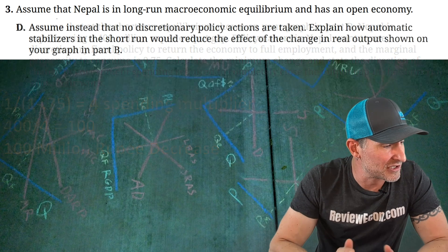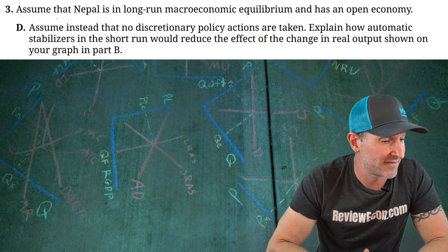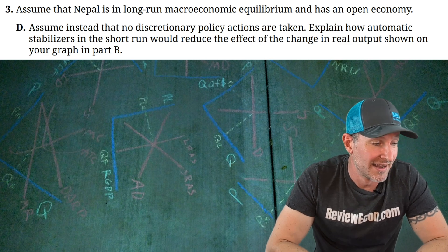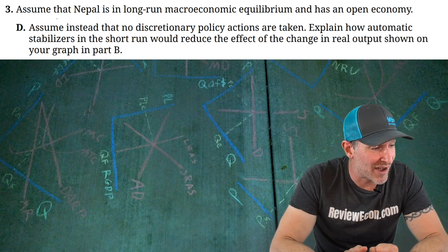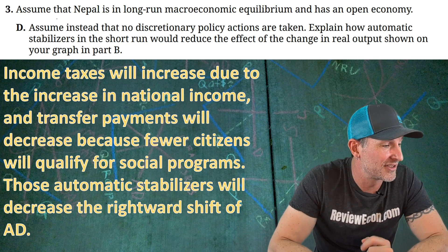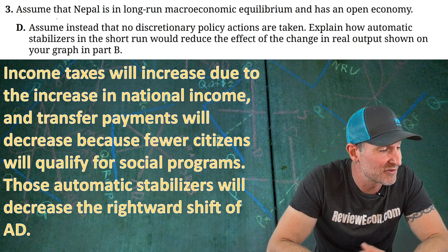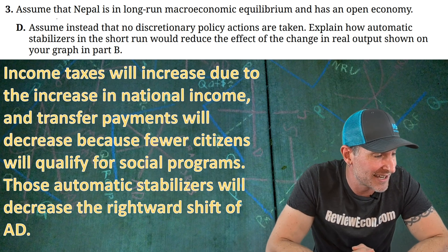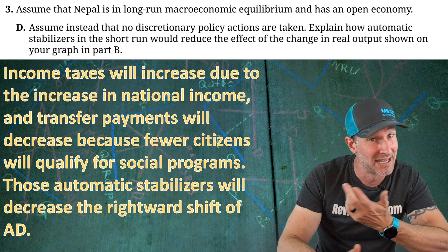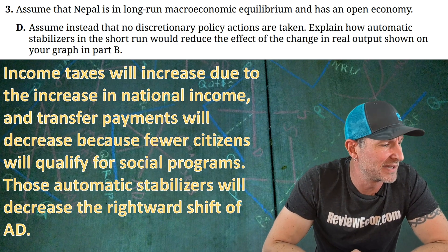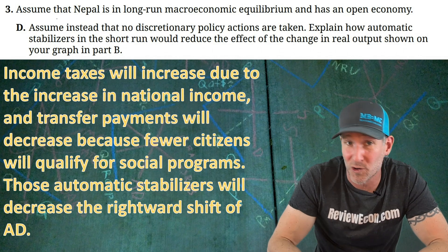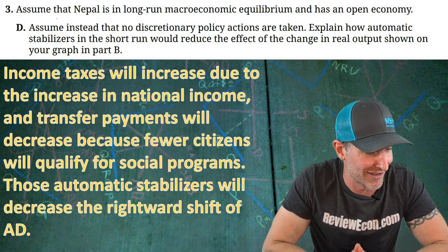Moving on to Part D. Assume no discretionary actions are taken — explain how automatic stabilizers would reduce the effect of the change in real output shown in Part B. Income taxes will increase due to the increase in national income, and transfer payments will decrease because fewer citizens qualify for social programs. Those automatic stabilizers will decrease the rightward shift of the aggregate demand curve. I'm not 100% sure where the rubric will land, but I think you'll be expected to mention at least income taxes or transfer payments as the automatic stabilizers.